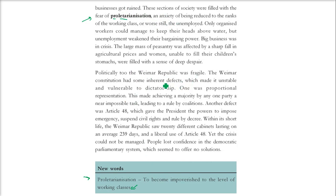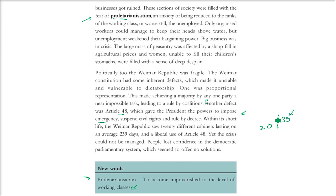Politically, the Weimar Republic was also fragile. Its constitution had certain inherent defects that made it unstable and vulnerable. There was a defect called Article 48, which gave the president the power to impose emergency, suspend civil rights, and rule by decree. This article was used immensely in a short time. The Weimar Republic saw 20 different cabinets with an average lifespan of 239 days. People lost confidence in the democratic parliamentary system because the Weimar Republic was not solving their problems.